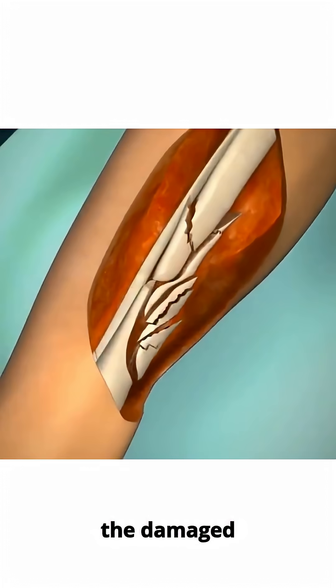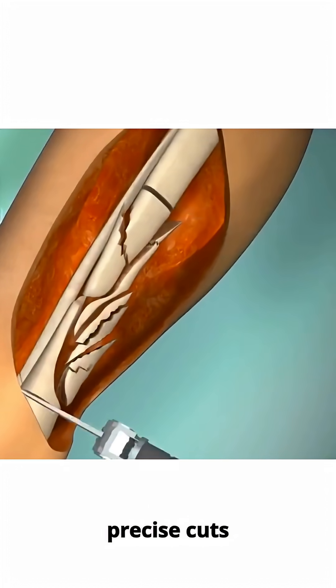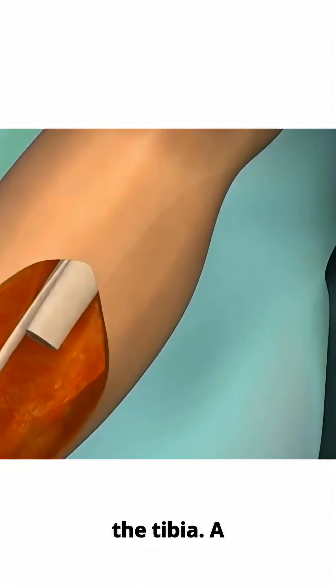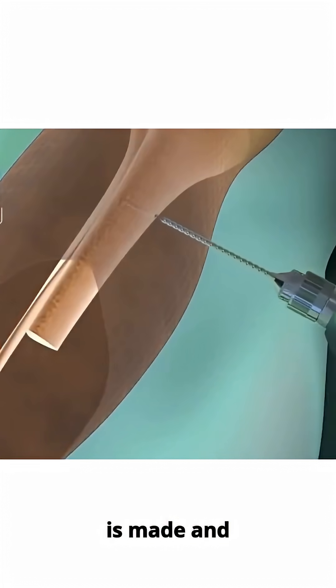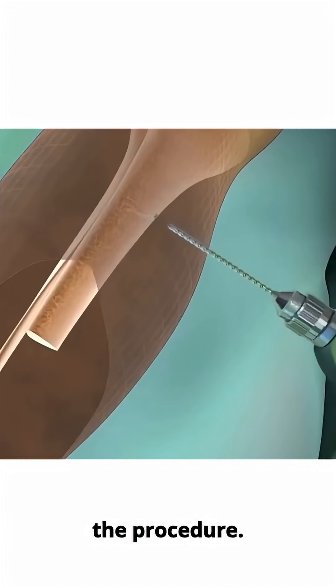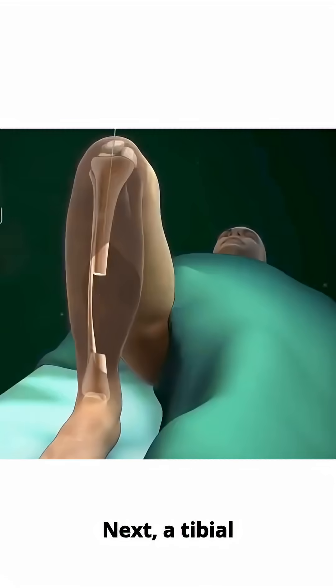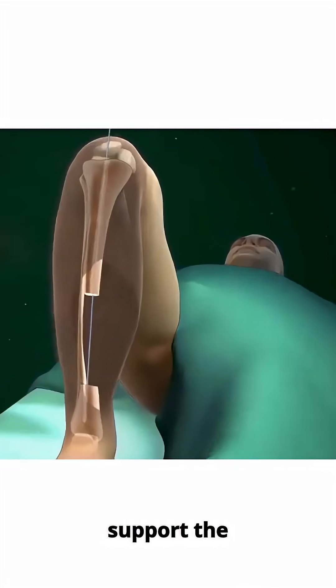To treat a bone injury, the damaged bone is removed and precise cuts are made in the tibia. A small incision is made and holes are drilled to prepare for the procedure. Next, a tibial rod or nail is inserted into the bone to support the transport.